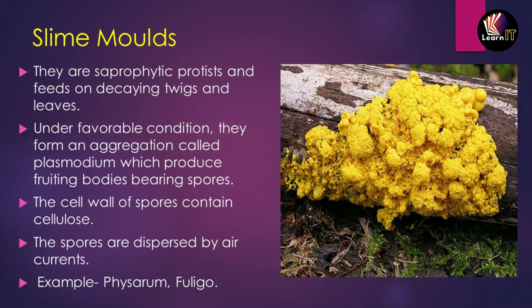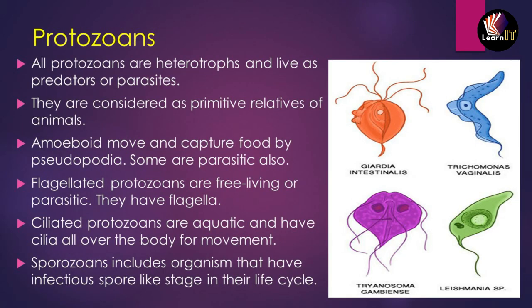The subtopic of Protista is slime molds. They are basically saprophytic protists and feed on decaying twigs and leaves. Under favorable conditions they form an aggregation called plasmodium, which produces fruitful bodies bearing spores. They are responsible for diseases in vegetables and plants. The cell wall of slime molds contains cellulose, and their spores are dispersed by air currents. Examples are Physarum and Fuligo.